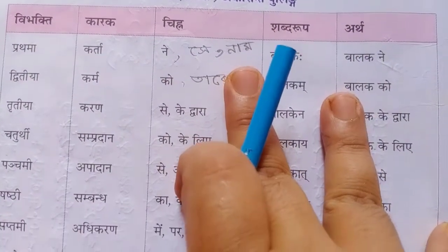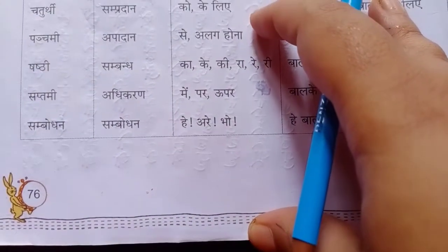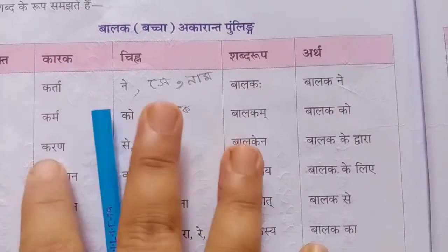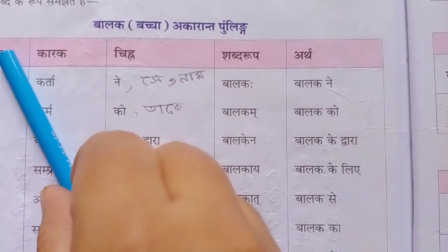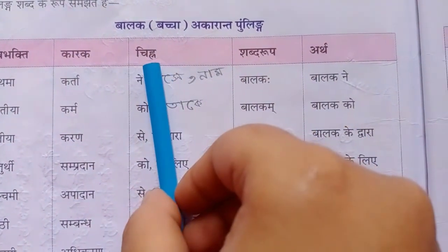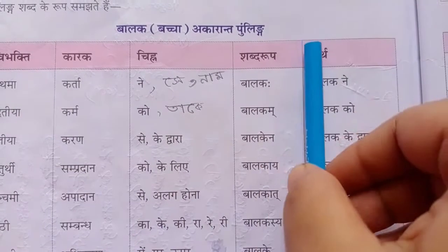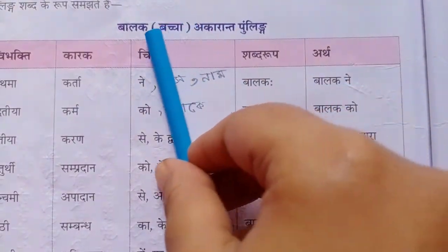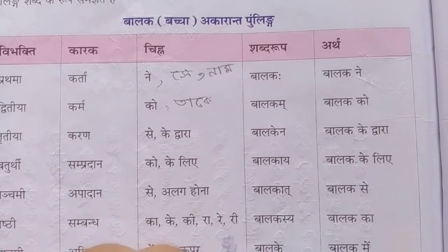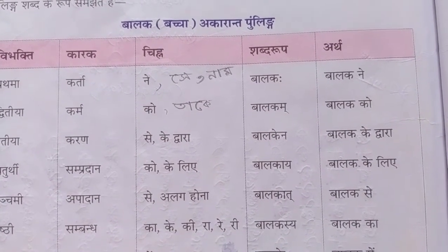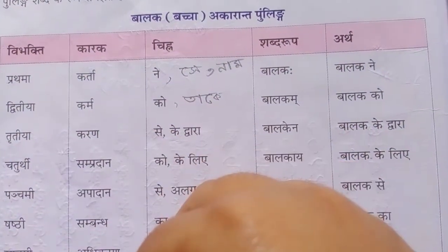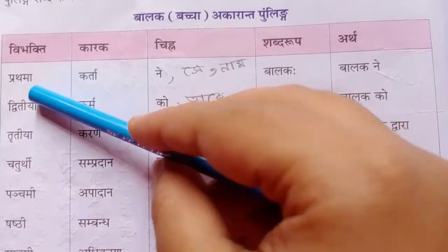See everyone, please open your Sanskrit book to page number 76. Today we learn about Vibhakti, Karak, and the sign — you can also call it Sabdarup. We will learn Prathama Vibhakti, Dwitiya Vibhakti, Tritiya Vibhakti, but today we will cover only Prathama and Dwitiya, not all.